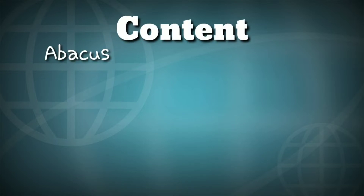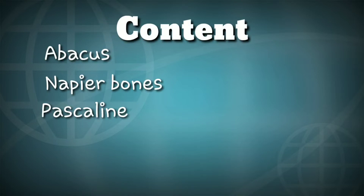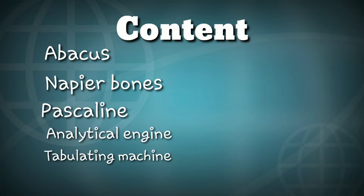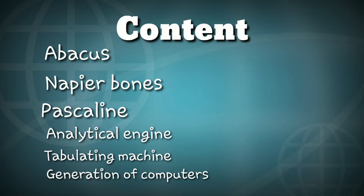The contents we will cover in this chapter are: Abacus, Napier Bones, Pascaline, Analytical Engine, Tabulating Machine, and Generation of Computers.